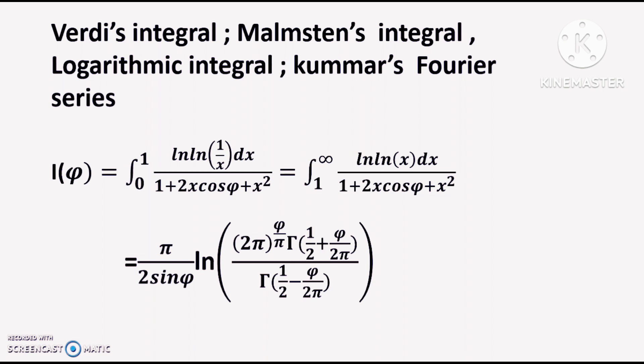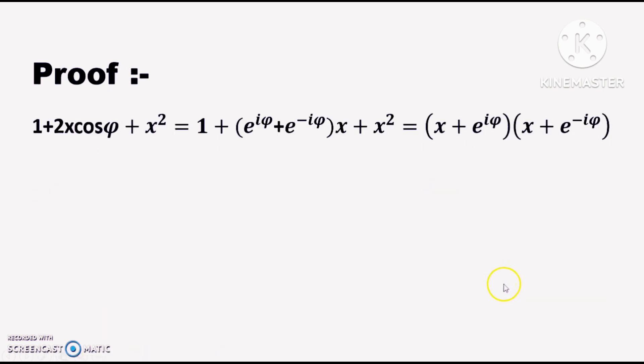It can be deduced via contour integration. Let's try to prove this equation, because it is very important for all mathematics learners. We see that 1 + 2x cos φ + x² can be written using cos φ = (e^(iφ) + e^(-iφ))/2, which is De Moivre's theorem at class 12 level.